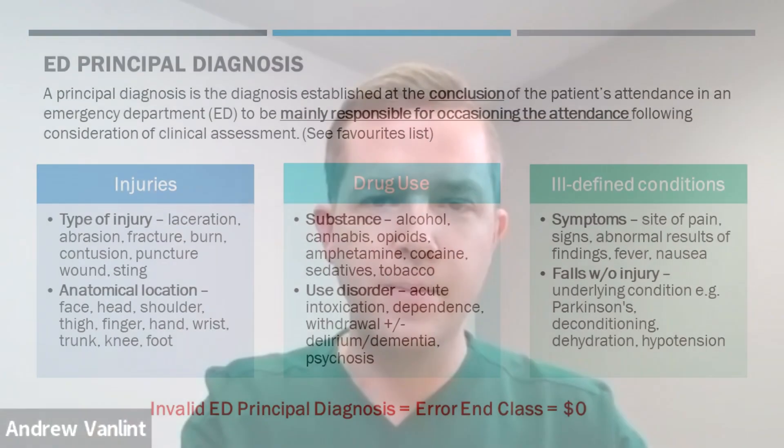Another point on this slide is with drug use. Being specific about putting diagnostic terminology associated with the particular substance — rather than just saying alcohol use, alcohol abuse, cannabis abuse, or amphetamine abuse — being specific about acute intoxication, dependence, withdrawal, and in some severe cases delirium, dementia, or psychosis related to withdrawal or acute intoxication. That principle of using the most specific diagnostic terminology reflects the patient's admission and reason for presentation and associated management.